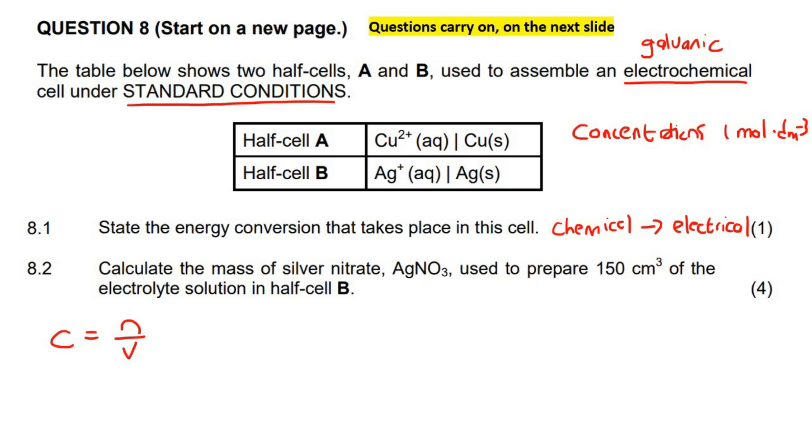So then we could use our formula C equals to N over V, and we could work out the moles of silver nitrate. Remember, though, this must be converted into decimeters. So 150 centimeter cubed is the same as 0.15 decimeters. So we can say that the concentration is 1, and then the number of moles we don't know, and the volume would be 0.15.